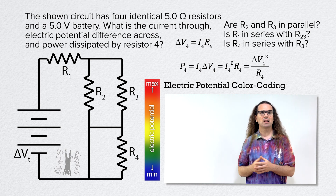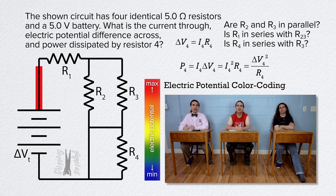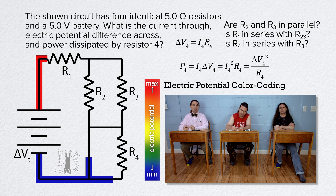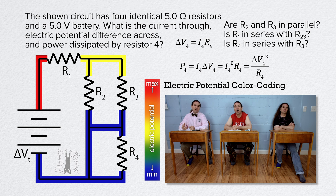It helps by determining basic information about electric potential differences across circuit elements, and therefore you can see what circuit elements are in series, parallel, or otherwise. Starting at the positive terminal of the battery, draw red on the wire until you get to the next circuit element, which is resistor 1. Everything in red is the maximum electric potential. Then go back to the battery and draw blue on the wires until you get to the next circuit elements, which are resistor 4, resistor 2, and resistor 3. Everything in blue is at the minimum electric potential. That leaves us with the wires between resistor 1 and resistors 2 and 3, which have an electric potential somewhere between the maximum and the minimum. Let's draw yellow on those wires. Right now we do not really know what the electric potential is; we just know that all the wires between resistor 1 and resistors 2 and 3 are at the same electric potential.